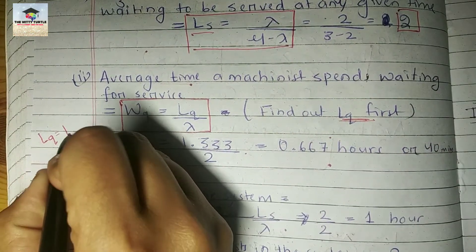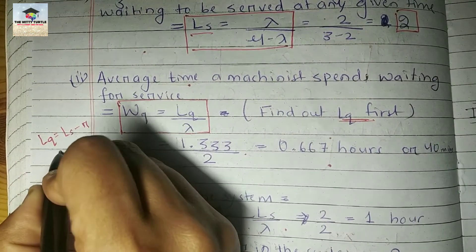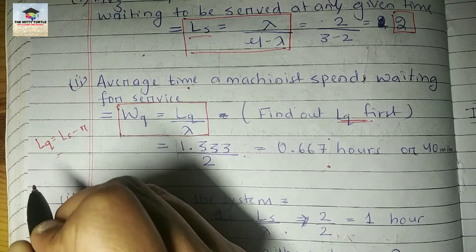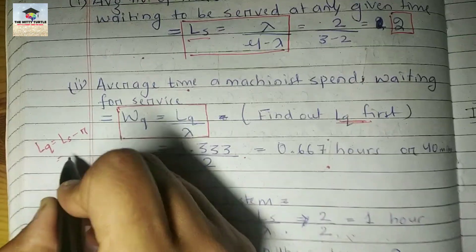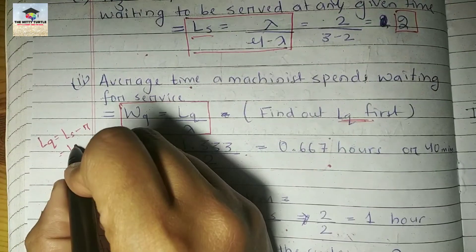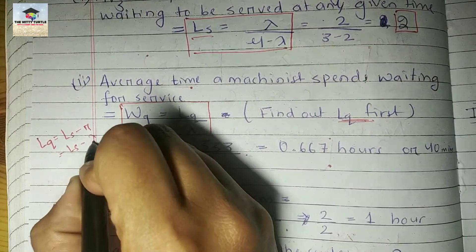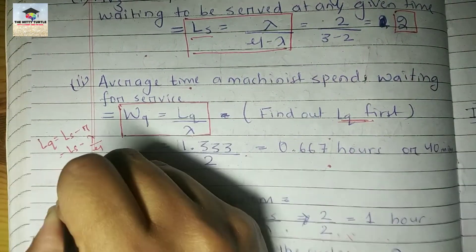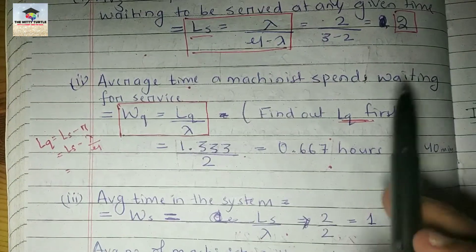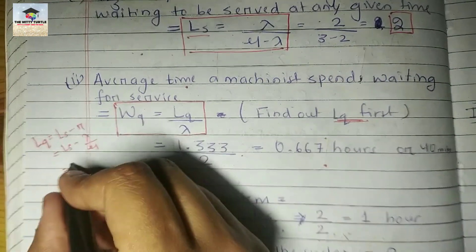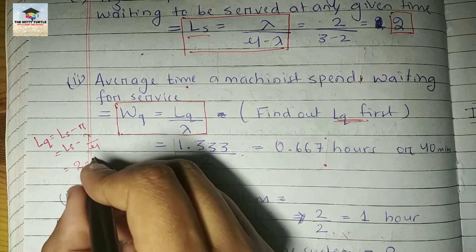The formula for Lq is Ls minus r, which equals Ls minus lambda by mu. We know the value of Ls is 2.